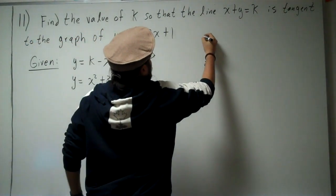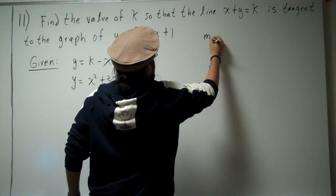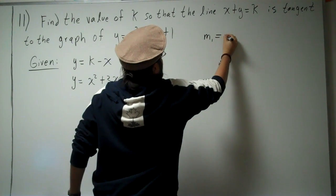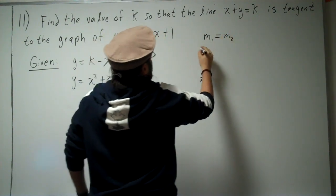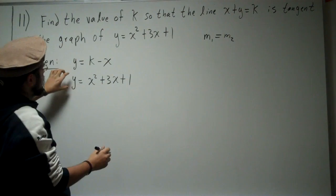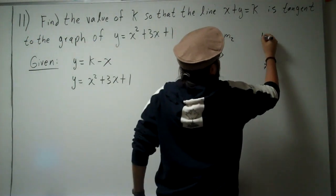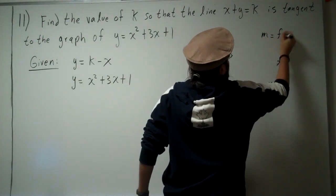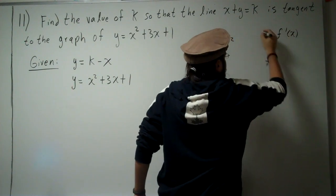Because if the slopes are the same, so you have m1 for this one and m2 for this one, that means the derivative of this must equal the derivative of this, since m equals f prime of x.